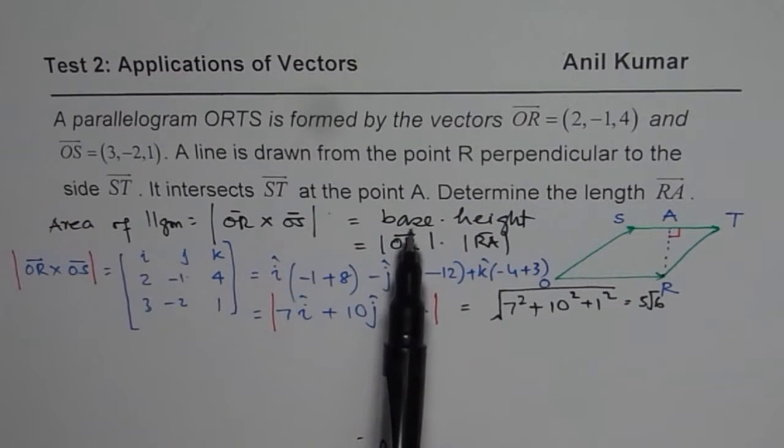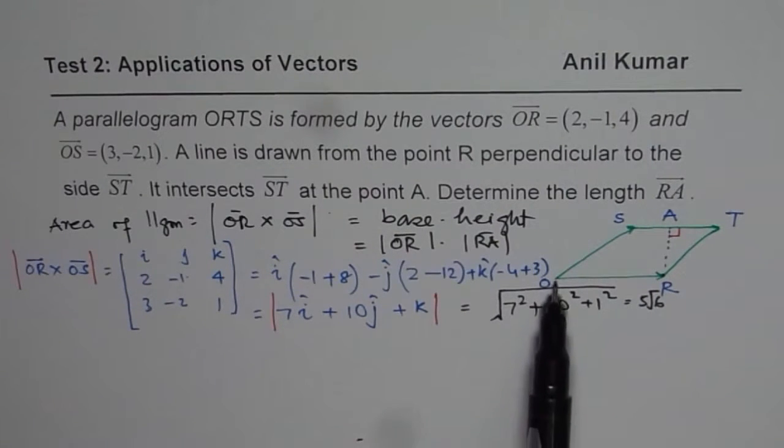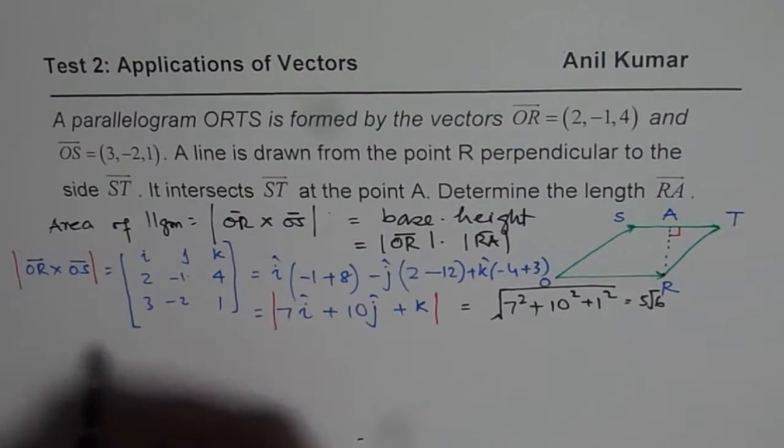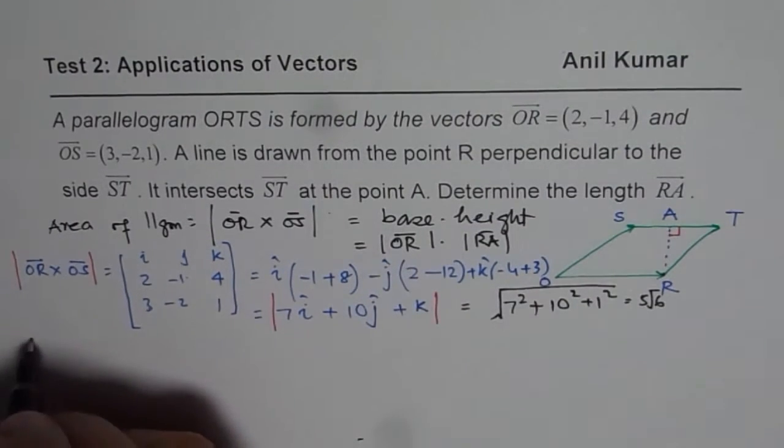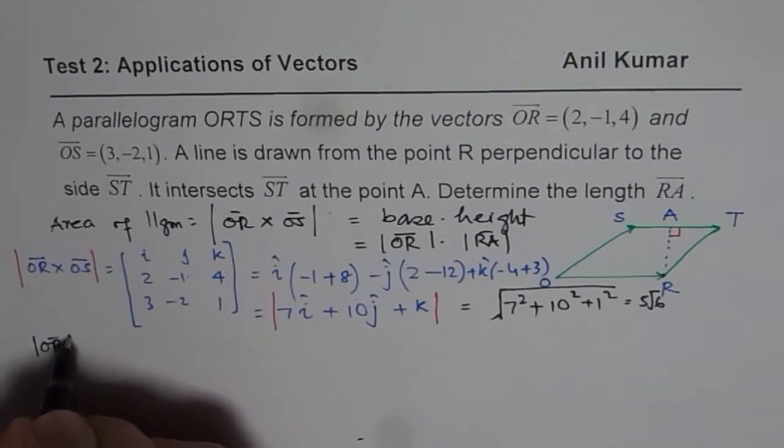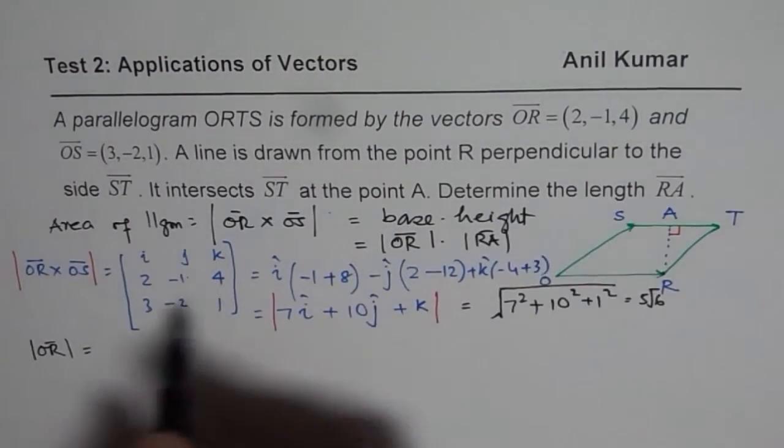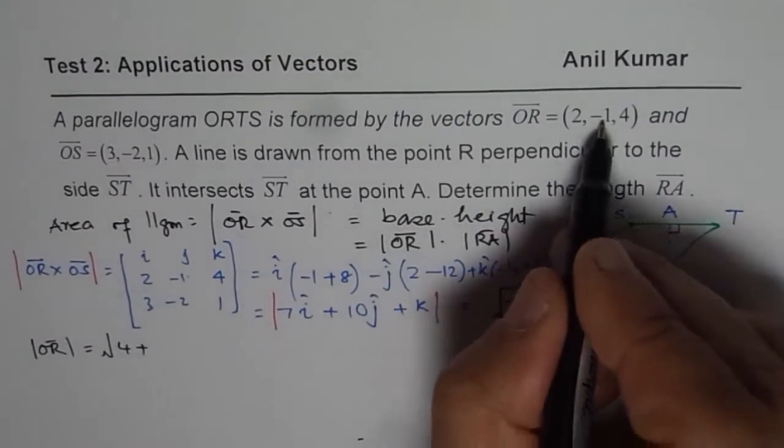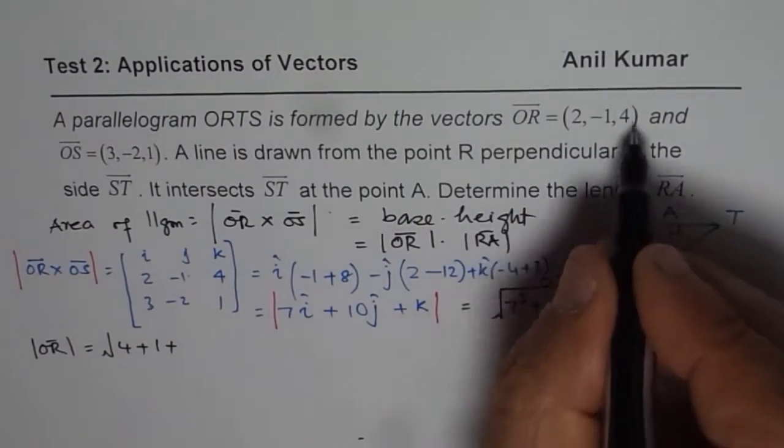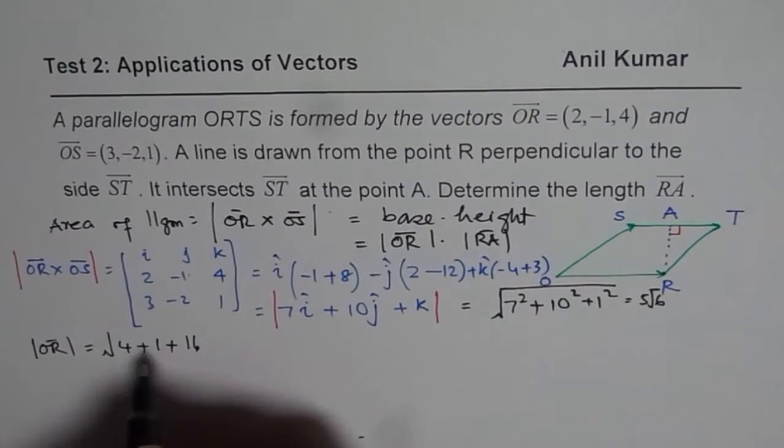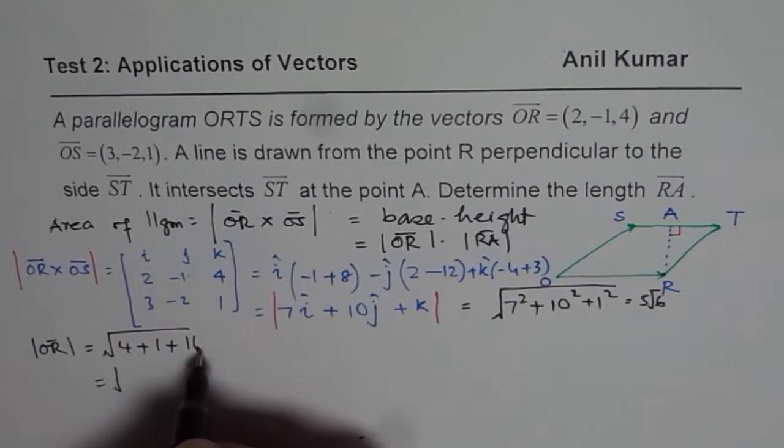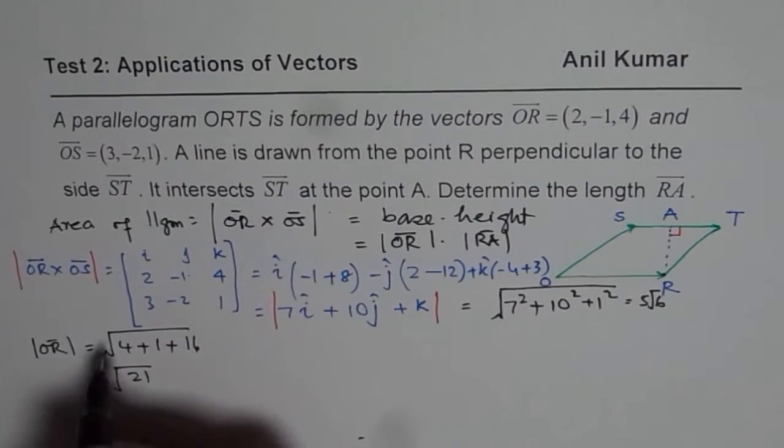Now the right side is base times height. So base is OR. So base is how much? Let us find what OR magnitude is. So magnitude of OR will be equal to, that is it. So it is square root of 2 square, let me write 4, plus magnitude of -1 is 1, plus 4 square is 16. So just find this out. So that gives us square root of 21. So that is OR.